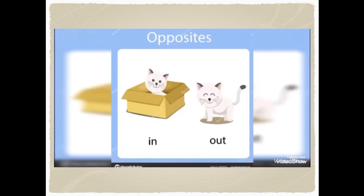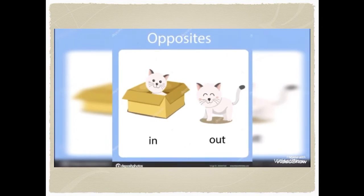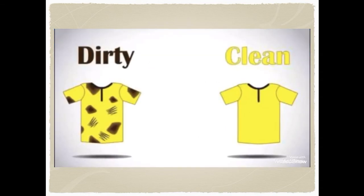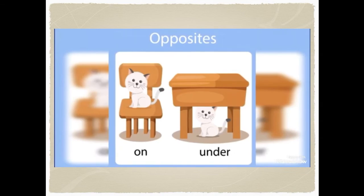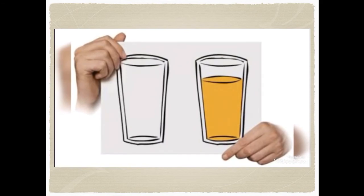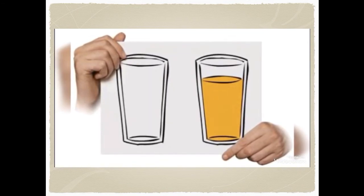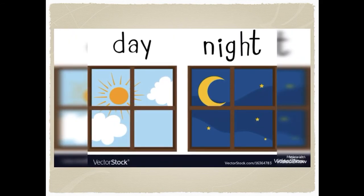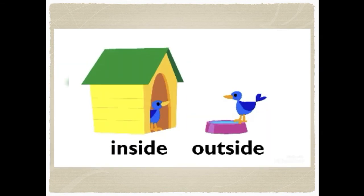What is the opposite of in? Out. Excellent. What is the opposite of clean? Dirty. What is the opposite of on? Under. What is the opposite of full? The glass with juice is full — the opposite of full is empty. What is the opposite of closed? Open. What is the opposite of day? Night. What is the opposite of inside? Outside.